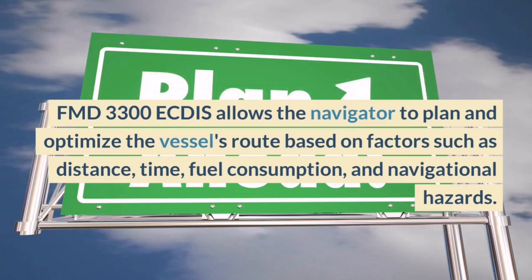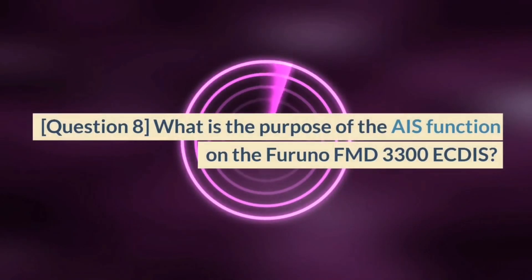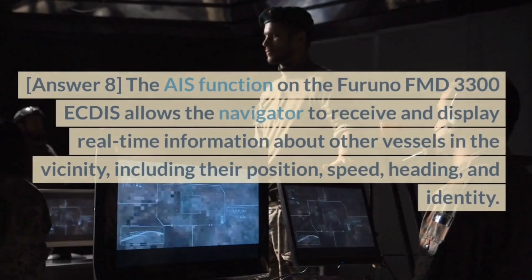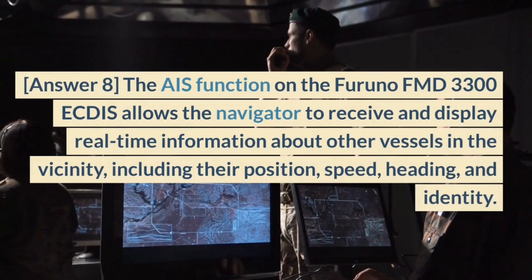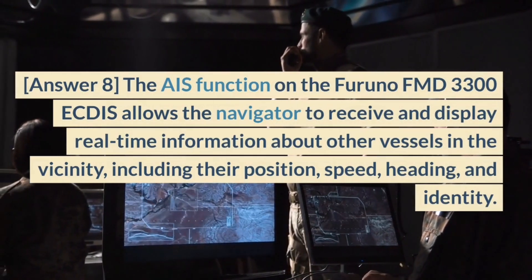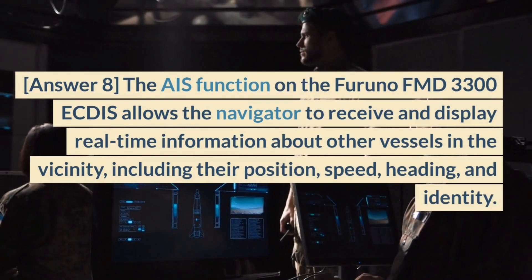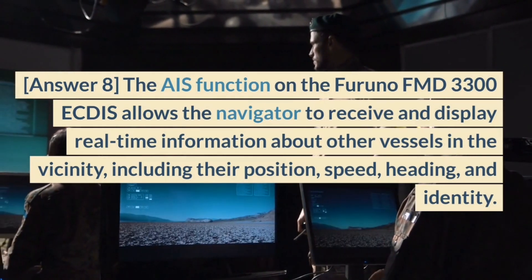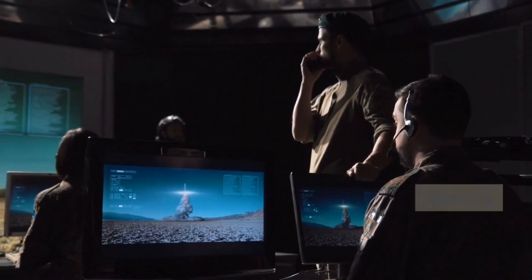Question 8. What is the purpose of the AIS function on the Furuno FMD 3300 ECDIS? Answer 8. The AIS function on the Furuno FMD 3300 ECDIS allows the navigator to receive and display real-time information about other vessels in the vicinity, including their position, speed, heading, and identity.